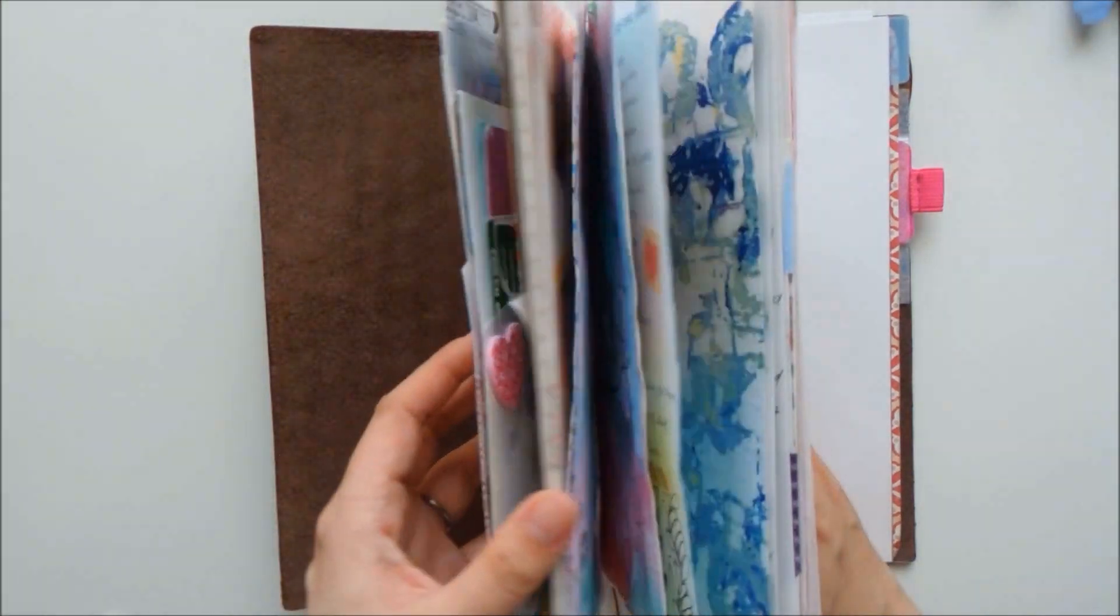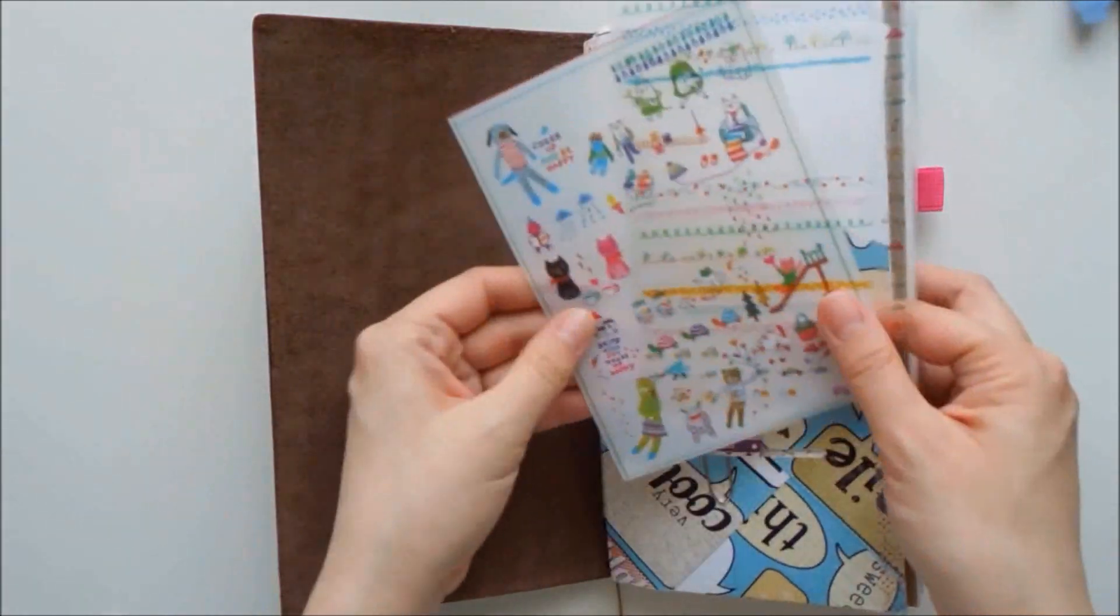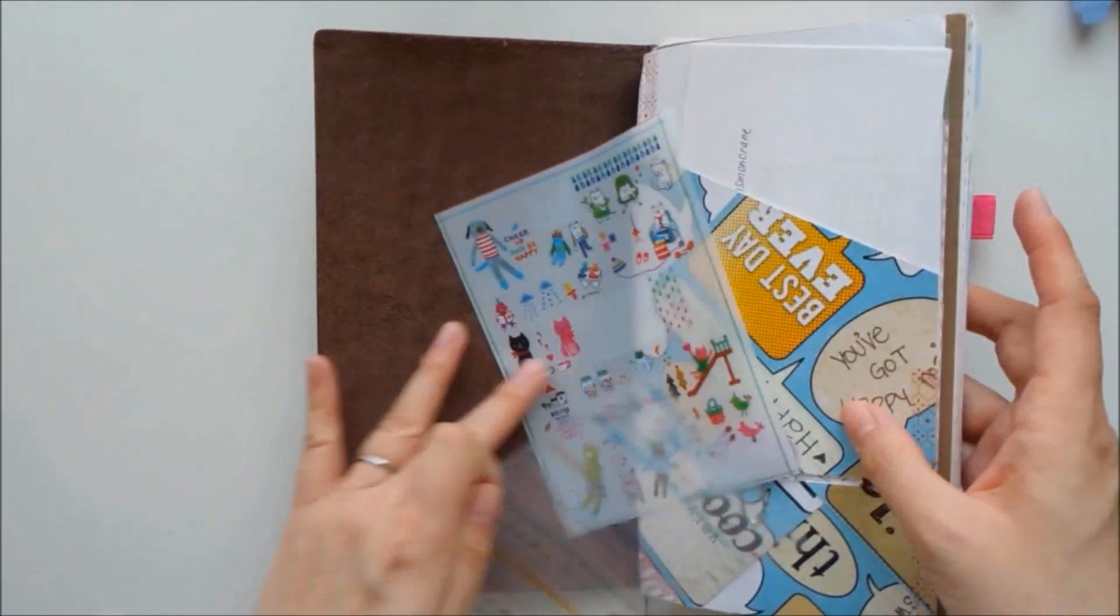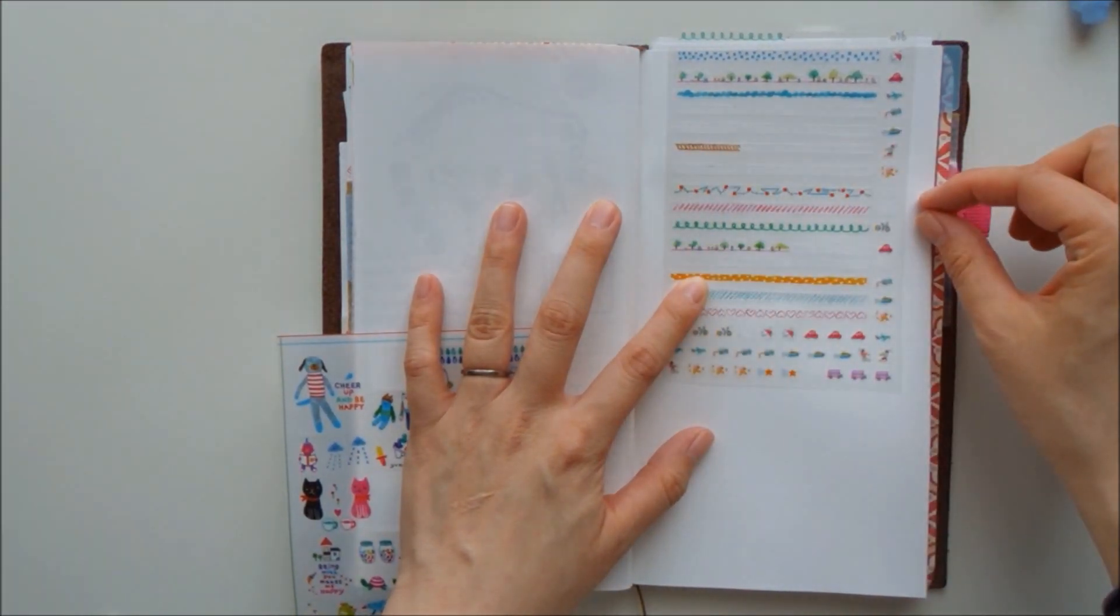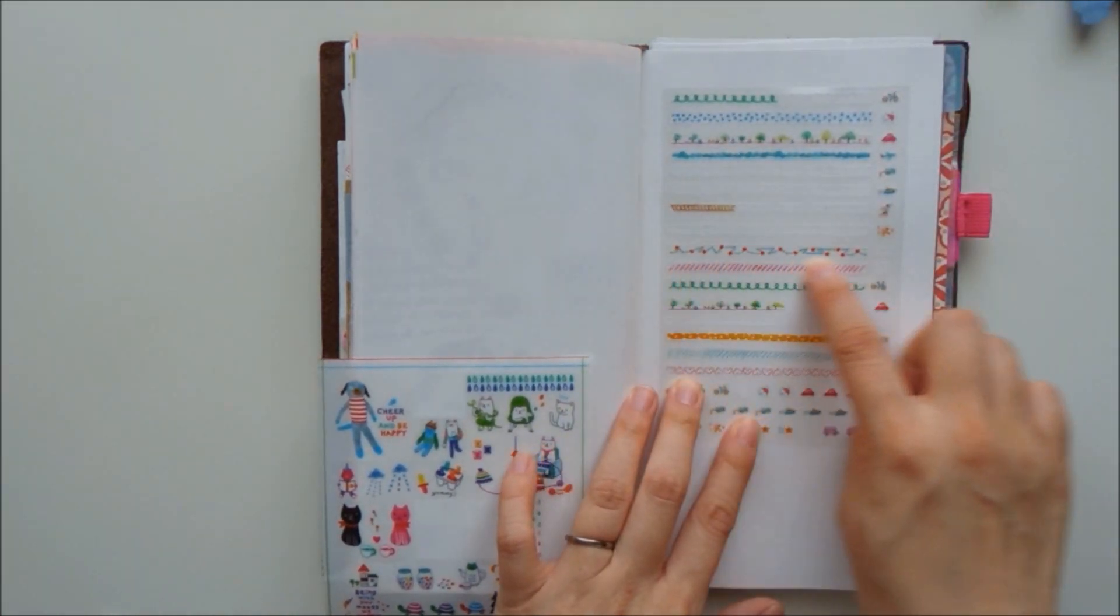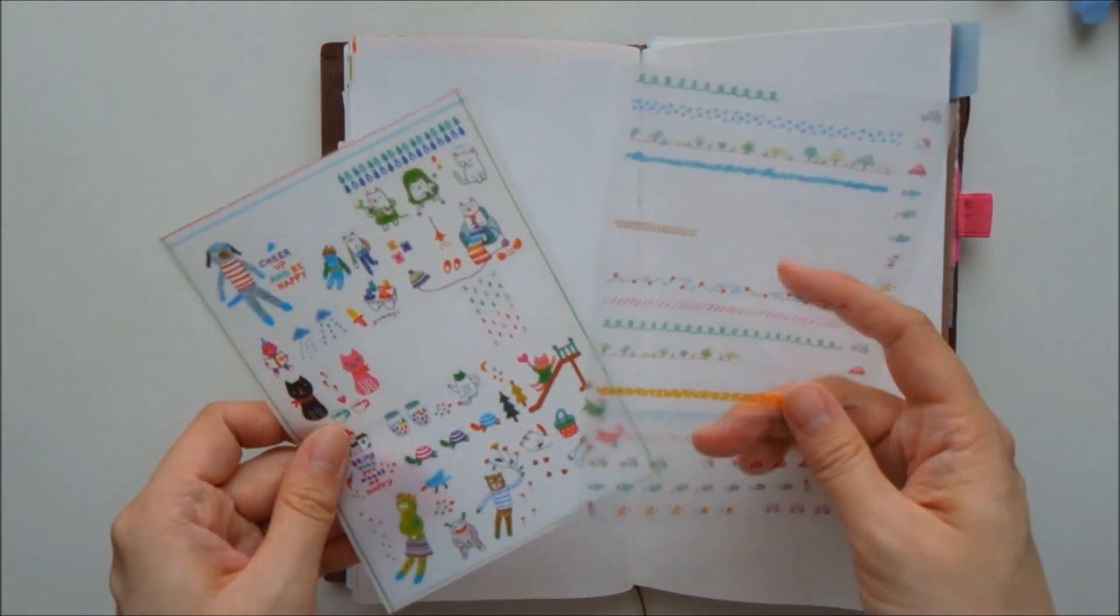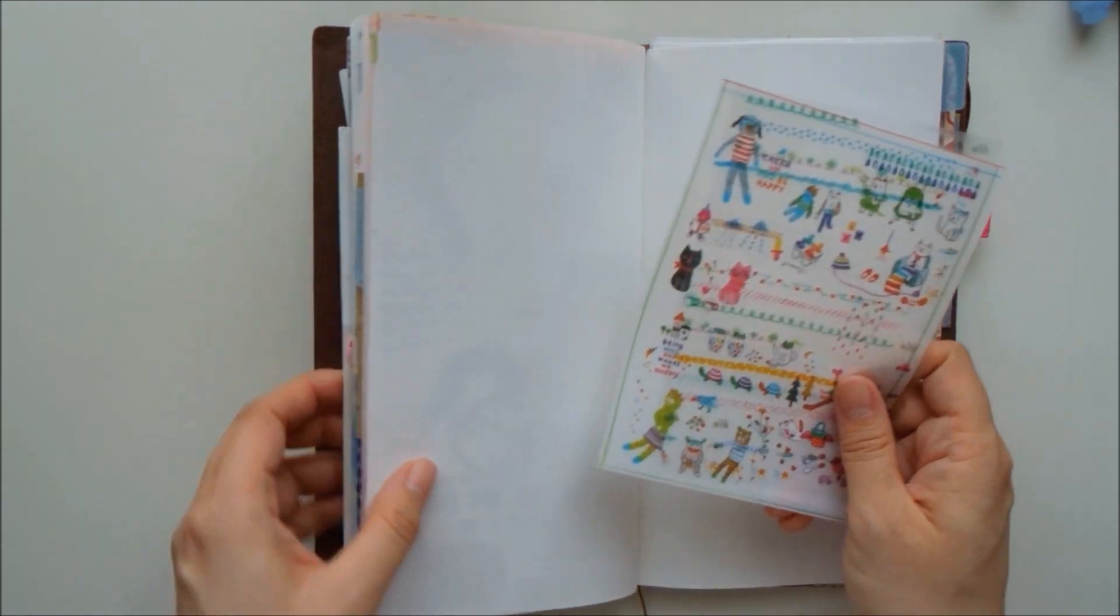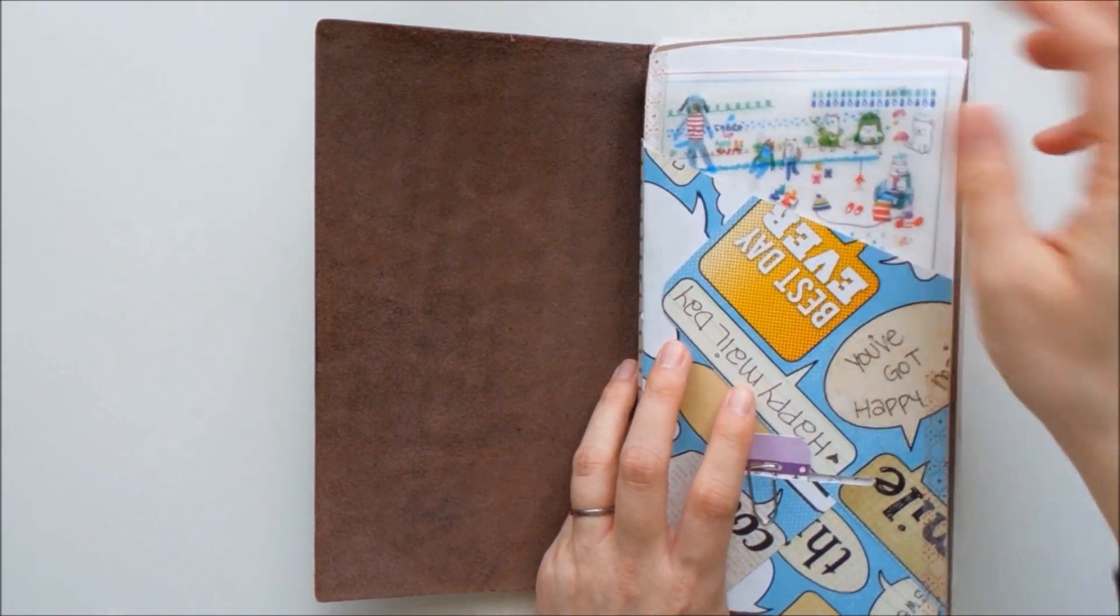Stickers like these, I like to use these ones. Similar to washi tape, it adds a border. If I'm finished with my writing, I can just use one of these stickers to kind of border it off. So I do really enjoy these clear type of stickers as well.